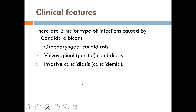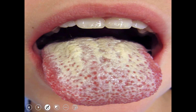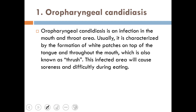Candida albicans has three clinical features: oropharyngeal candidiasis, vulvovaginal candidiasis, and invasive candidiasis. Oral candidiasis is infection in the mouth and throat area, characterized by white patches on the tongue and throughout the mouth — also known as oral thrush. The infected area causes soreness and difficulty in eating.